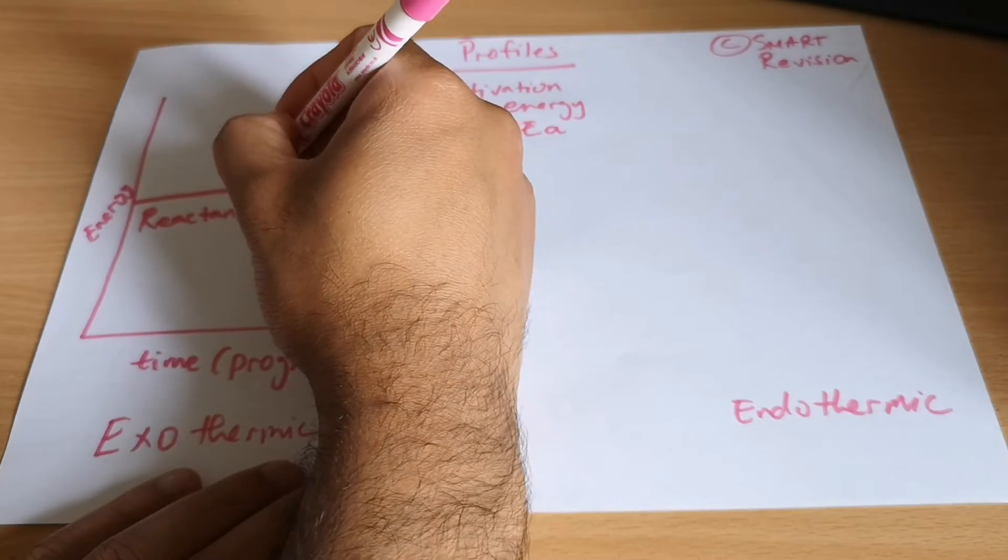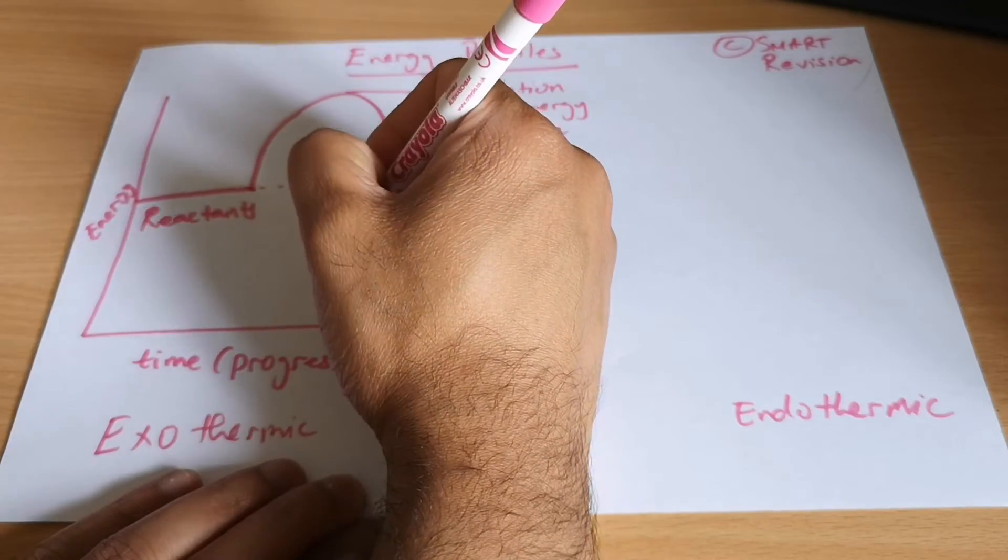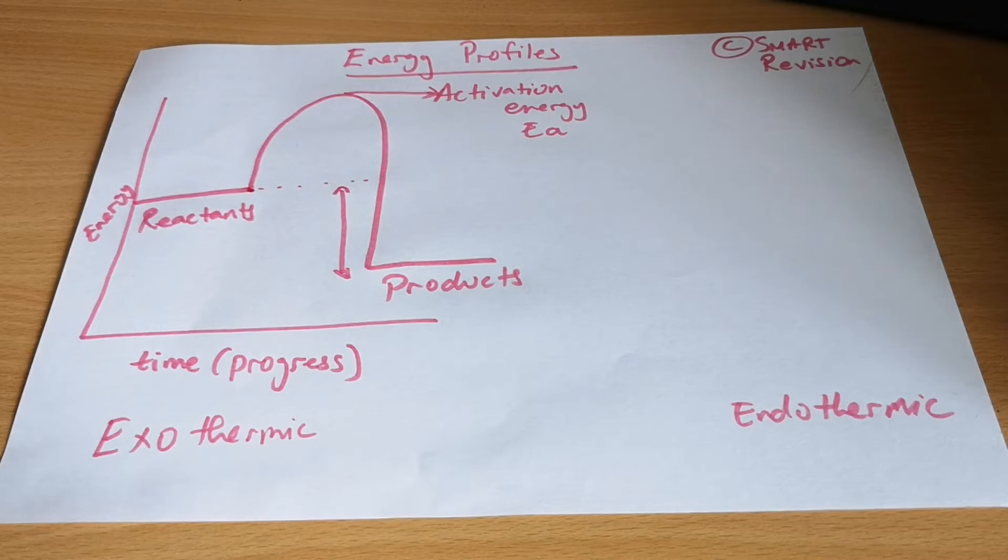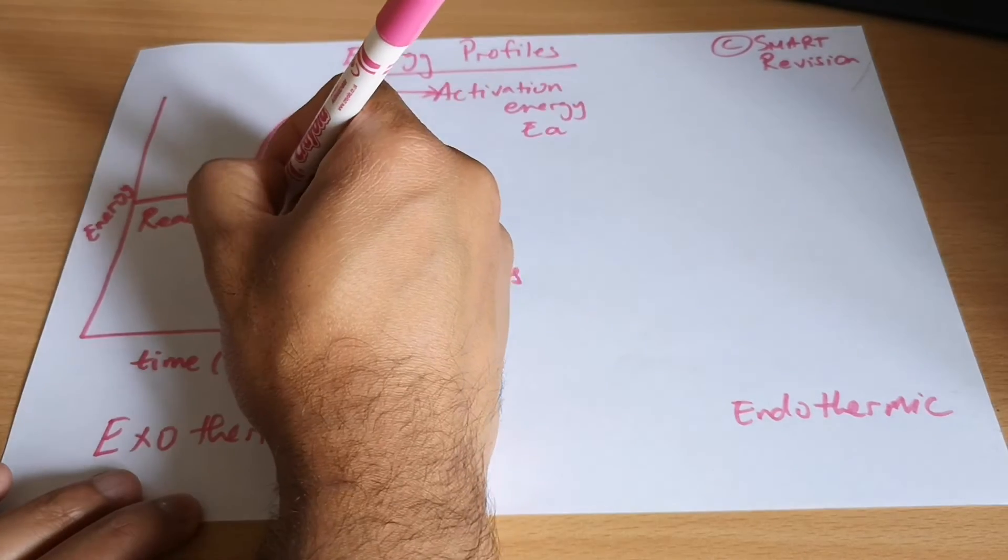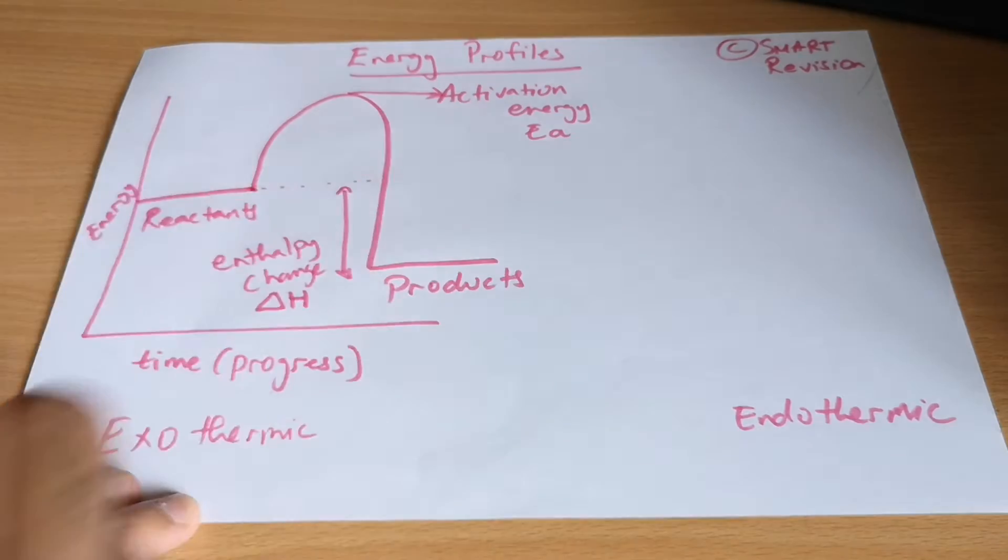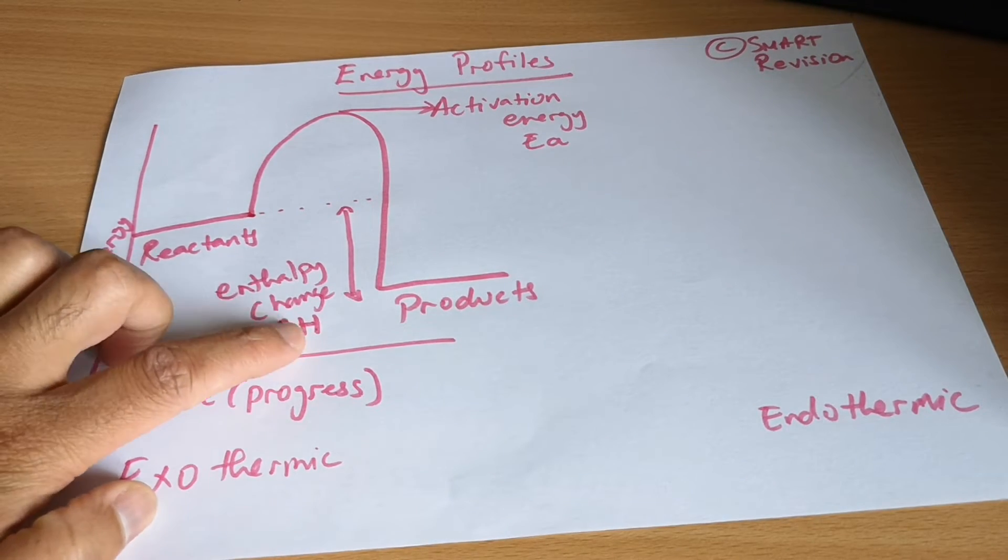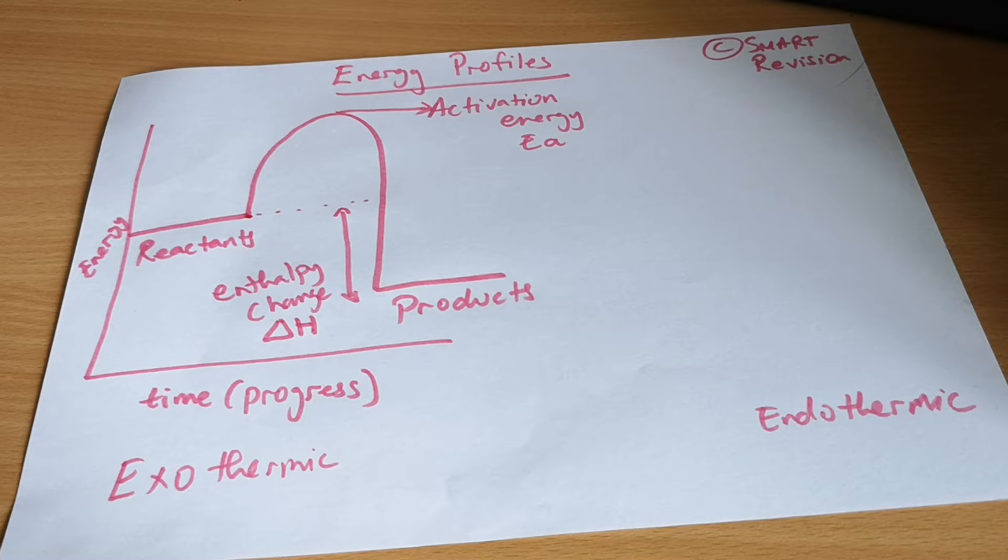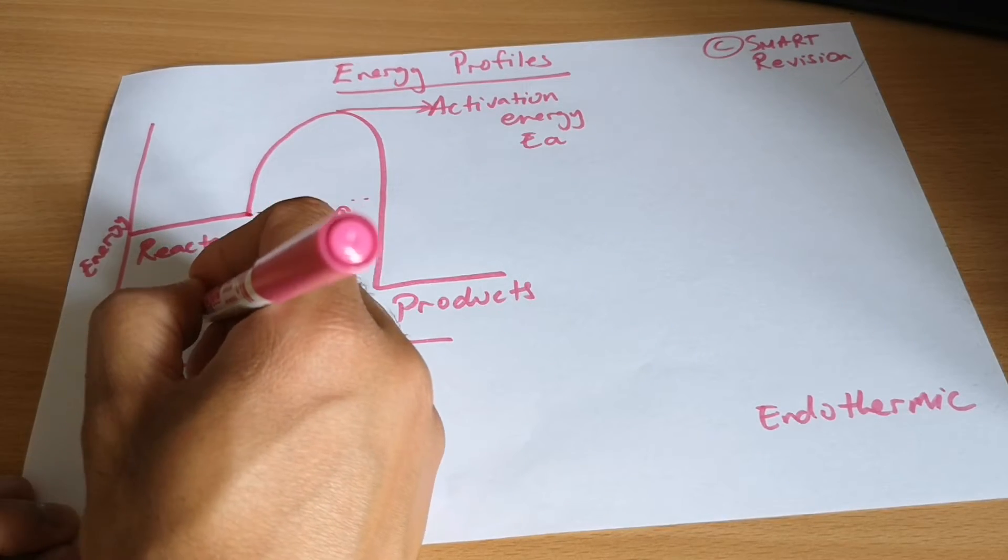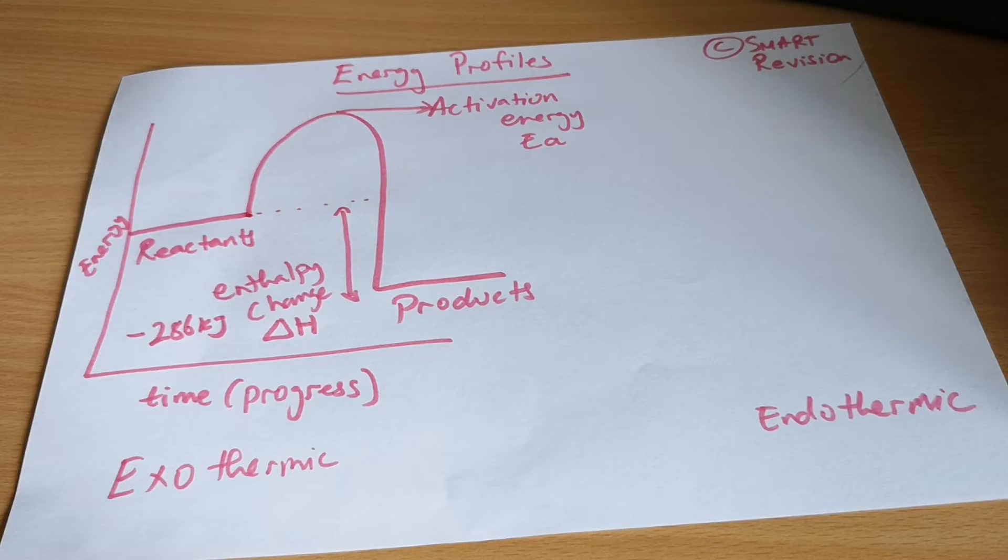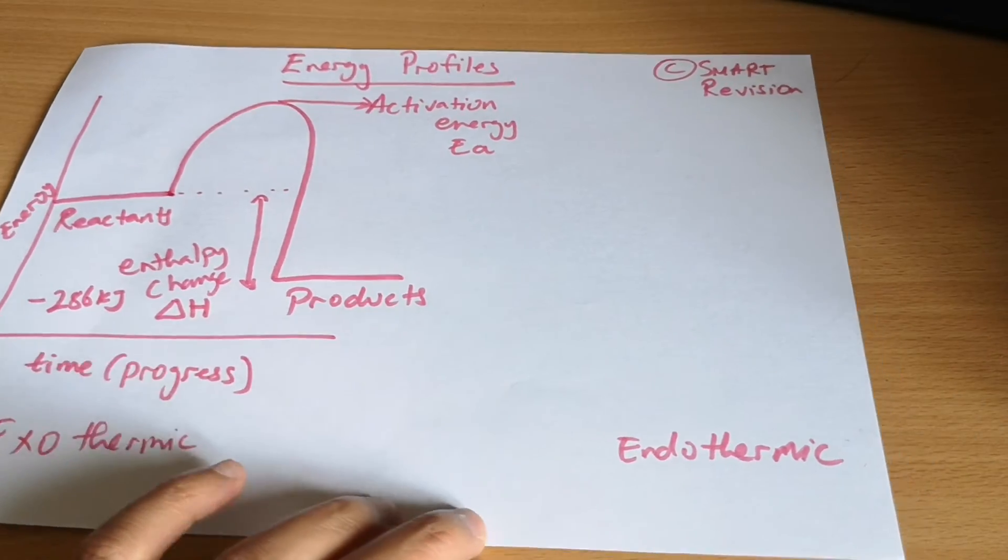The difference between these two, between the energy levels, is called enthalpy or enthalpy, however you want to pronounce it, and it's given a sign of delta H. So that triangle H, that change in the energy levels. So that's an exothermic reaction. If I've got a number on here it will be minus 286 kilojoules. If it's a minus, it's an exothermic reaction.